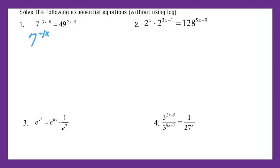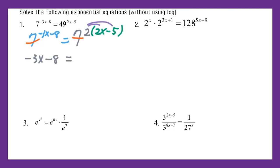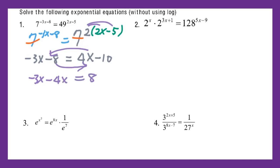Negative 3x minus 8 equals 7 squared. Then with the original exponents you do multiplication. So in this way I make the same base and I get negative 3x minus 8 equal to 4x minus 10. I do the distributive property. Then for this linear function I need to isolate the variable on one side. Remember, across the river change sign: I got negative 3x minus 4x equal to 8 minus 10.